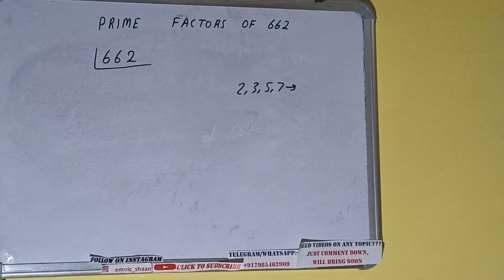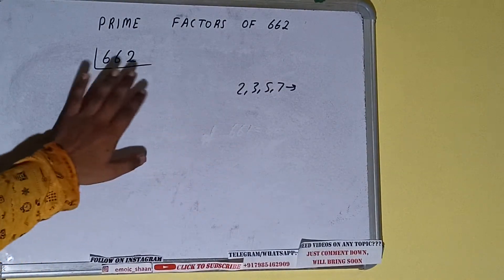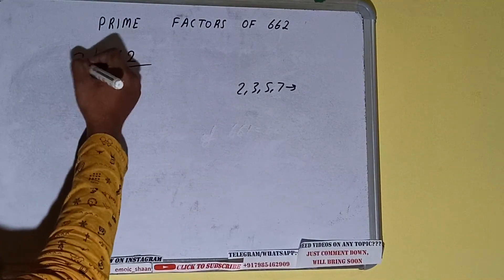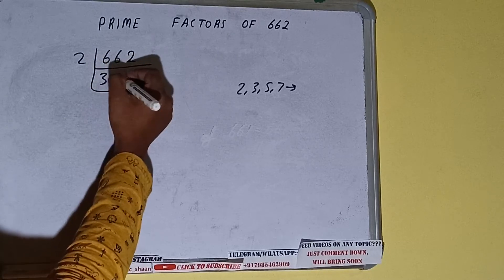Alright, so we'll check with the lowest prime number we have, that is 2. Is the number 662 divisible by 2? Yes it is, because the number is even and we'll be having 331.